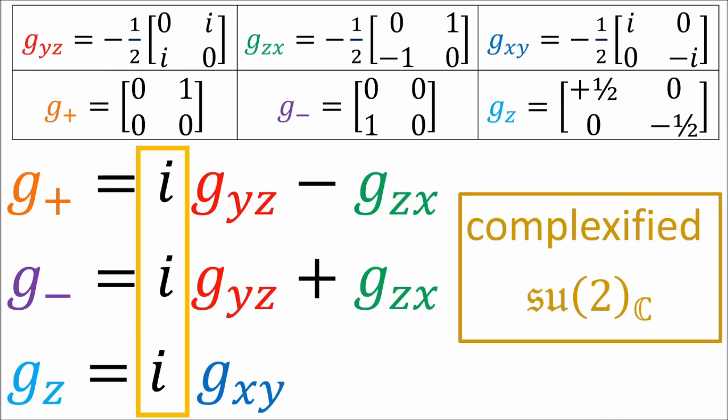Let's calculate G plus†·G plus by plugging in its definition. Passing the dagger to all terms inside the brackets flips the sign of i. Distributing the four terms and writing −i·i as 1, and knowing all SU2 generators are anti-Hermitian so the dagger gives a minus sign, we get: −G_YZ² − G_ZX² − i[G_YZ, G_ZX], which equals −G_YZ² − G_ZX² − i·G_XY. Since i·G_XY is the definition of G_Z, this gives G plus†·G plus = −G_YZ² − G_ZX² − G_Z. A similar calculation for G minus†·G minus gives the same expression but with +G_Z.